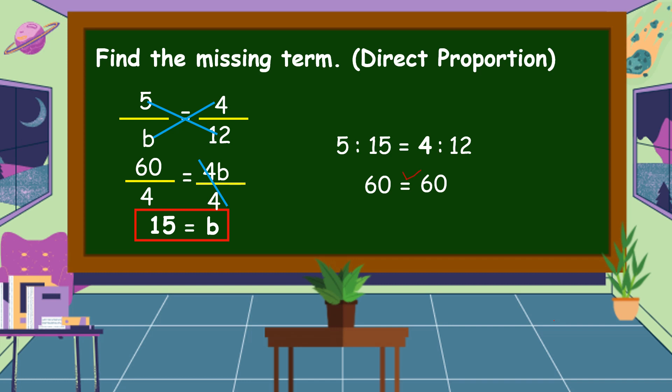Why is this a direct proportion? It is a direct proportion because if 5 is x and 15 is y in one equation, and 4 is x and 12 is y in the other — as x decreases, y also decreases. So this is a direct proportion.